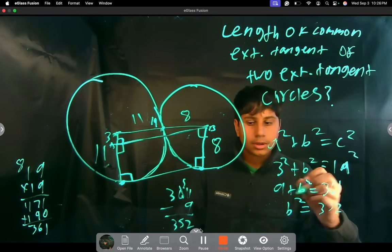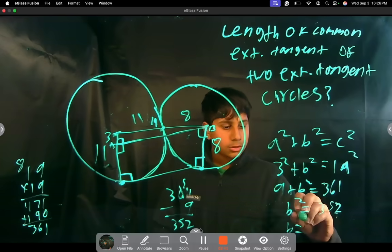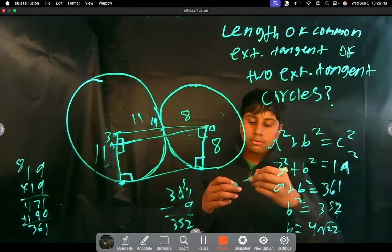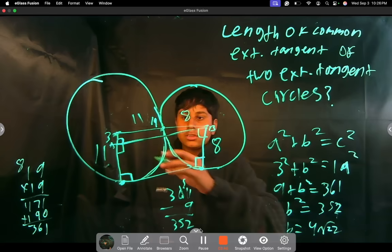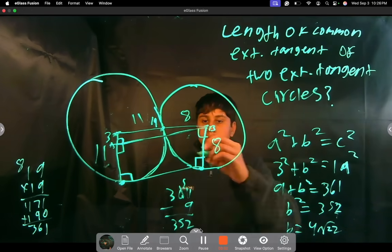So I have this pre-calculated. So the answer, if we find this, the square root is 4 root 22. If we simplify root 352, since that's this leg over here, that's going to be the same length over here.